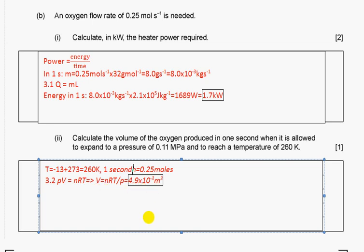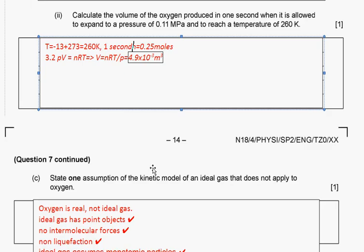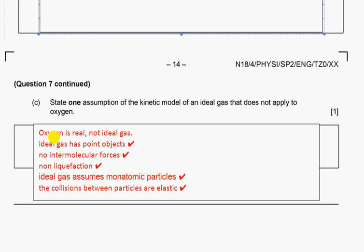State one assumption of the kinetic model of an ideal gas that doesn't apply to oxygen. Oxygen is a real gas, it is not ideal. Ideal gas has point objects, no intermolecular forces, no liquid phase or liquefying. Ideal gas assumes monoatomic particles. Collisions between particles are elastic. This is the end of the paper. Thank you very much for your attention. Good luck in your exams.